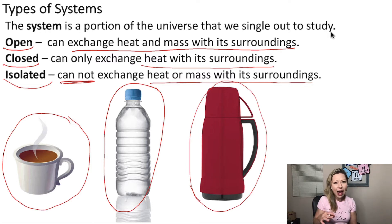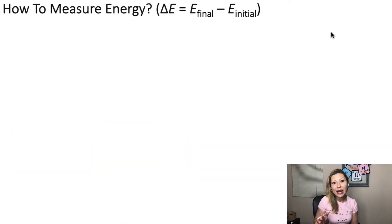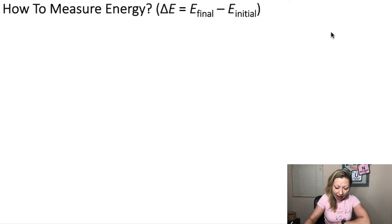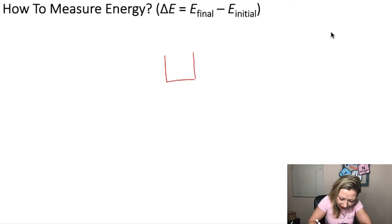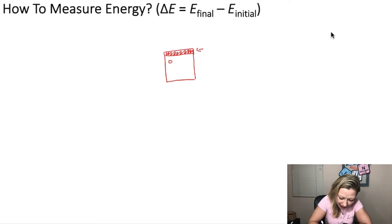Let's get back to how to measure energy exactly. We know that energy is defined as the ability to do work and transfer heat. So let's say that we have a container that contains some kind of monoatomic gas, and on top of this container we have a movable piston. The gas atoms have some kind of velocity inside this container.